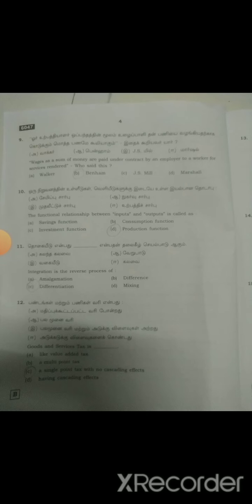Tenth one: The functional relationship between inputs and outputs is called as Option D, production function. Eleventh one: Integration is the reverse process of Option C, differentiation.